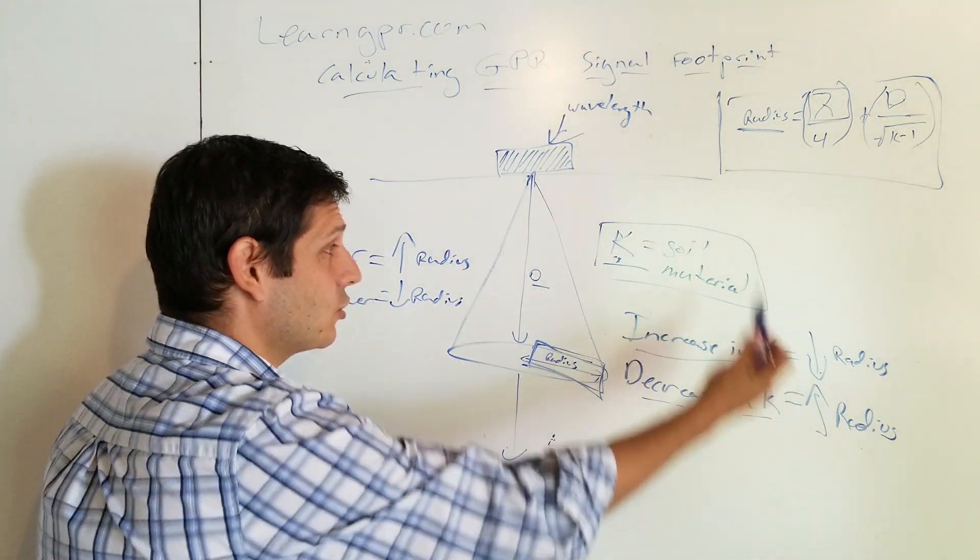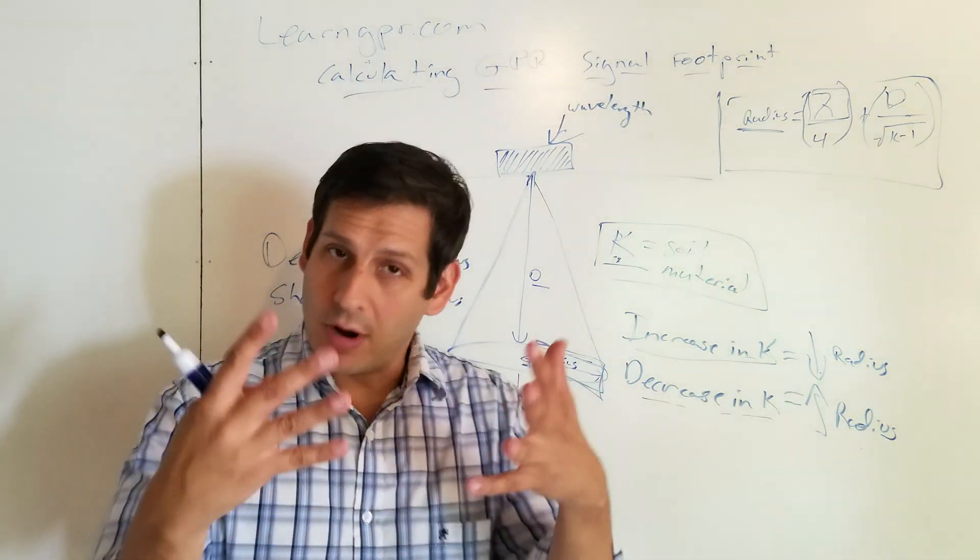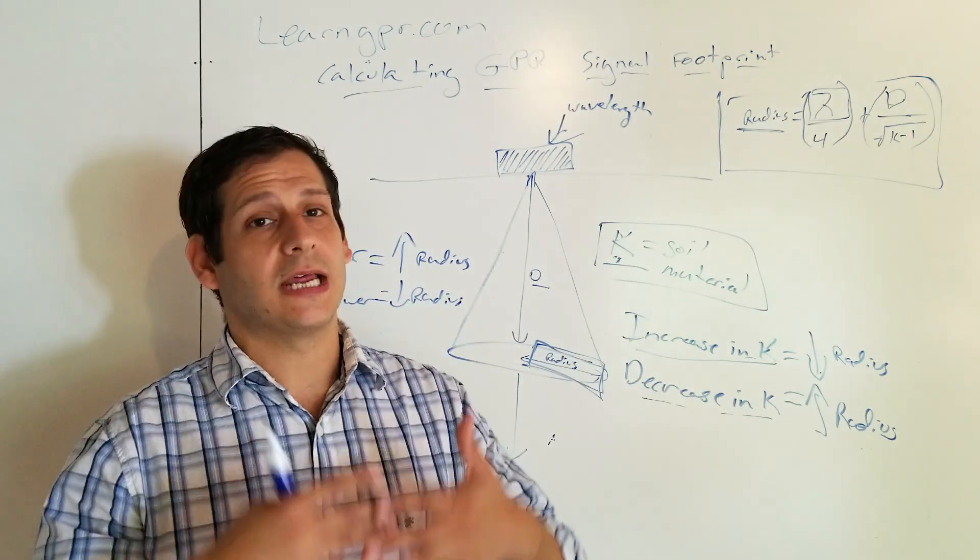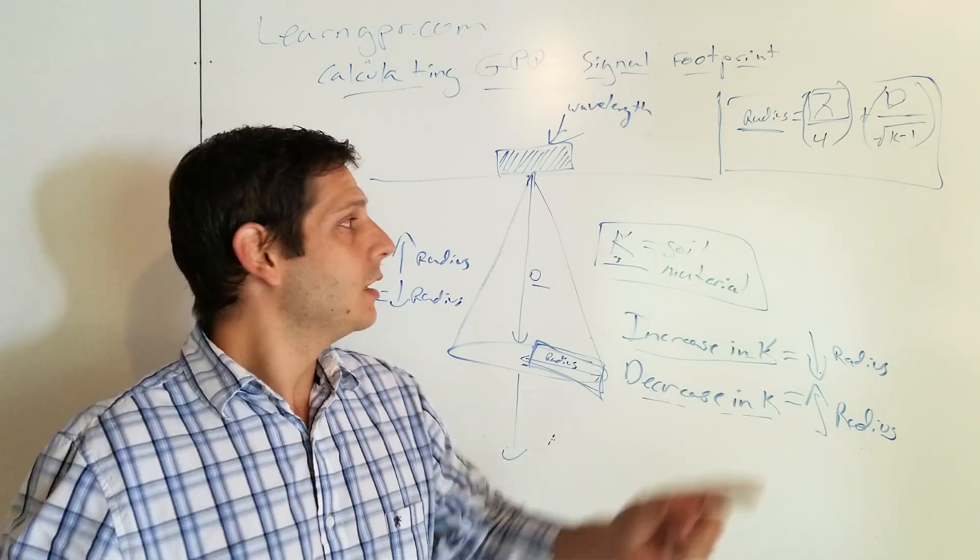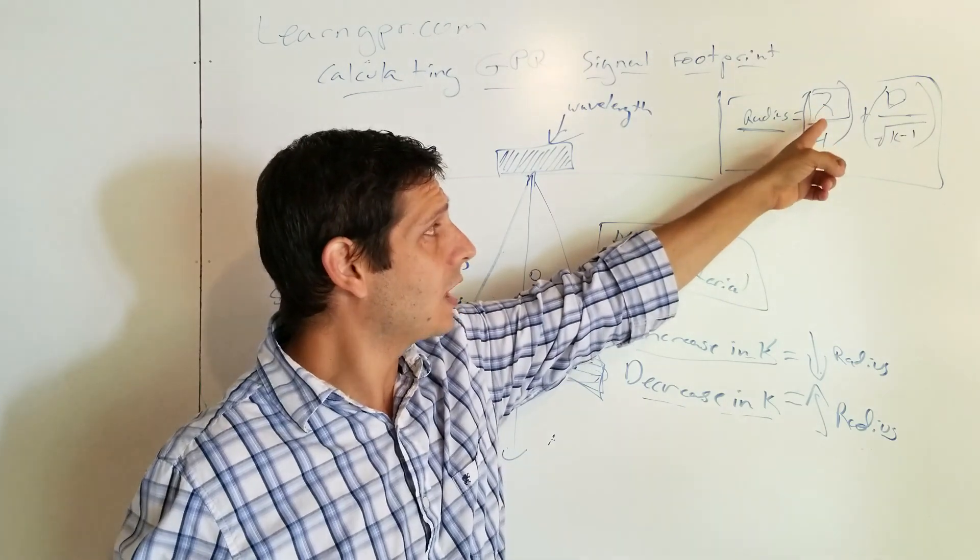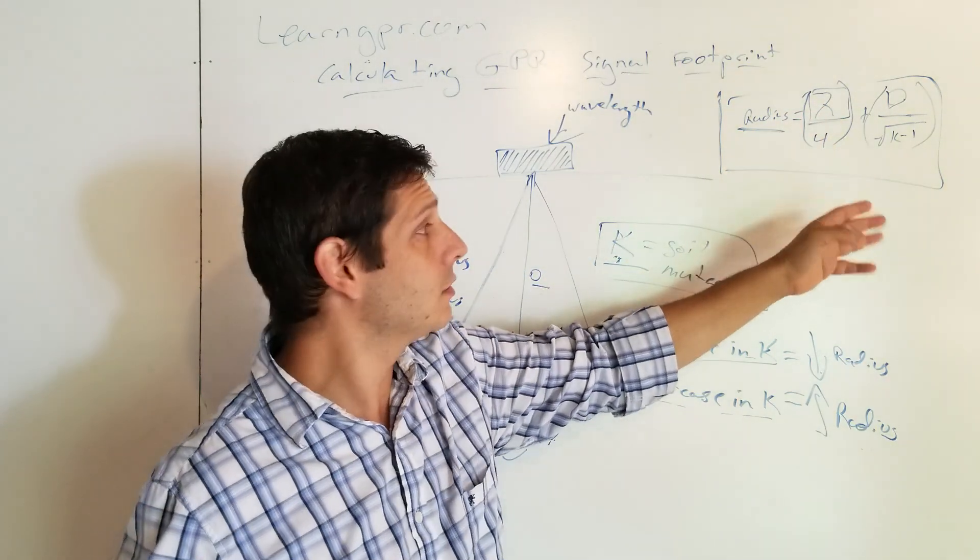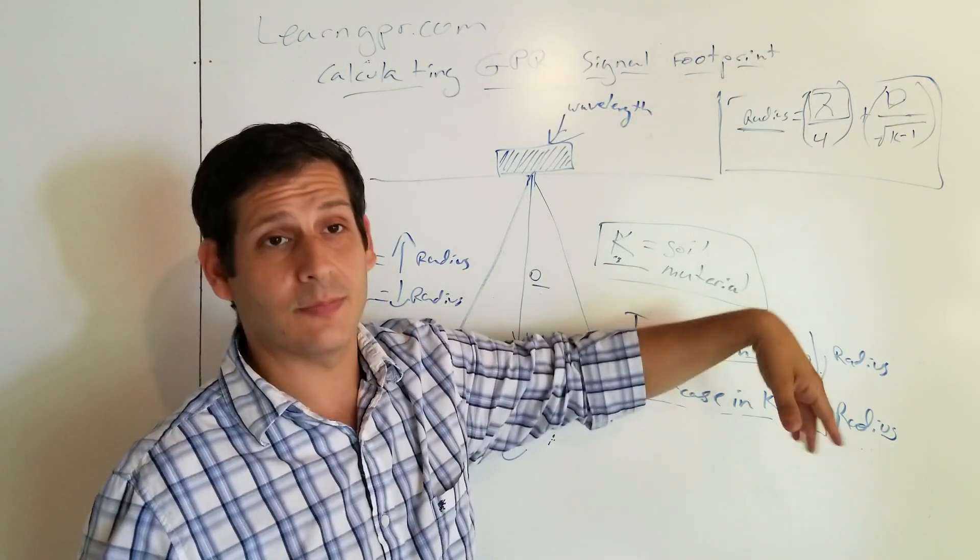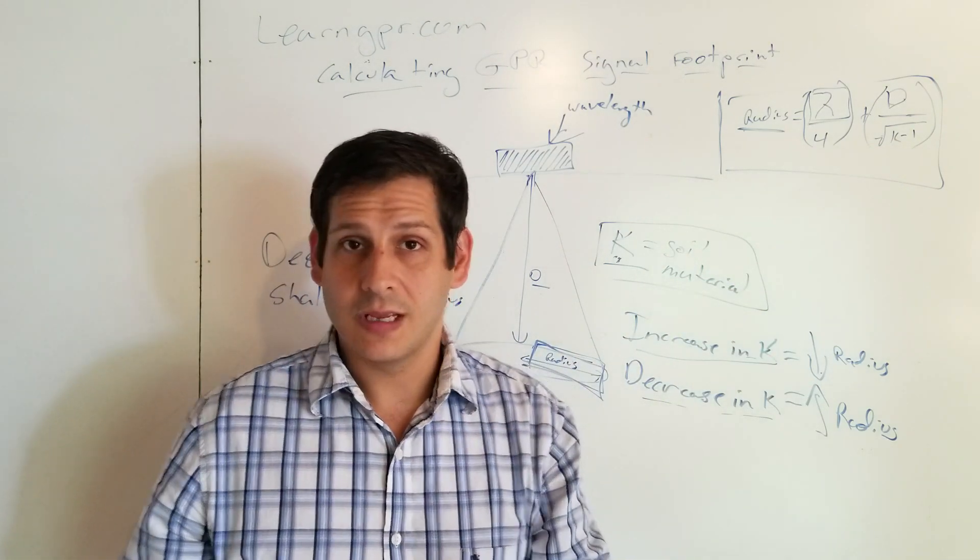So this is how this all plays out. But I wanted to answer it because I'm sure if one person had a question, others had a question about it. This is the formula. Radius equals wavelength divided by four plus depth divided by the square root of permittivity minus one.